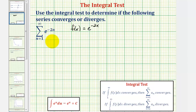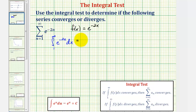Now we'll determine if the integral from one to infinity of f of x, which is e raised to the power of negative two x, integrated with respect to x, converges or diverges. If it converges, the series converges; if it diverges, the series diverges. Because we have an improper integral, let's write this as the limit as b approaches infinity of the integral from one to b of e raised to the power of negative two x dx.